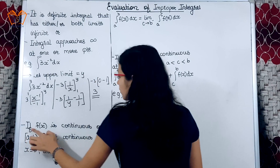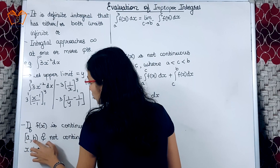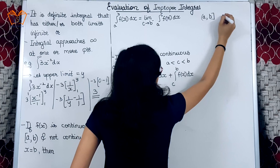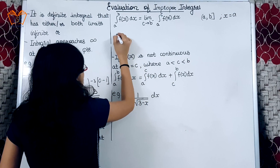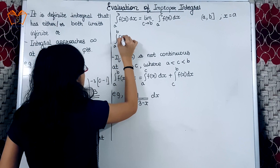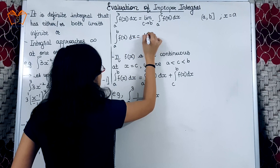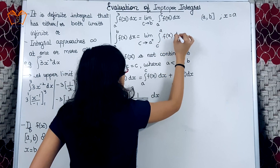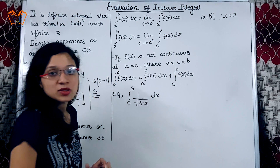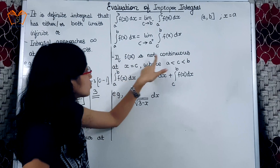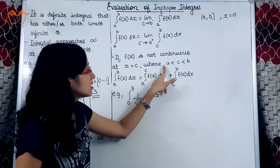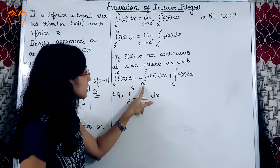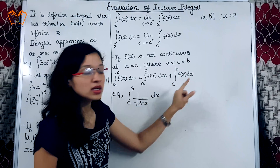The other case: if f(x) is continuous on the interval (a, b] and not continuous at x equals a, then integration from a to b of f(x) dx equals the limit as c tends to a plus of integration from c to b of f(x) dx. Next case: if f(x) is not continuous at x equals c and this c lies between the limits a and b, then integration from a to b of f(x) dx equals integration from a to c of f(x) dx plus integration from c to b of f(x) dx.